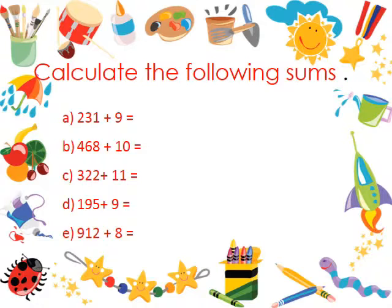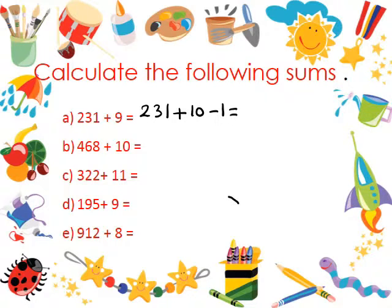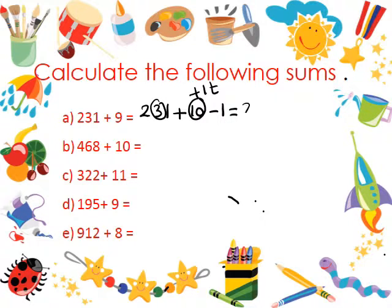In this slide, we have to calculate the following sums. For the first example, we have 231 plus 9. This means 231 plus 10 minus 1. Why? Because 9 is equal to 10 minus 1. We have to add plus 1 for the tens. Where is the tens value in 231? So what will be the number? 241. Minus 1 equals 240.